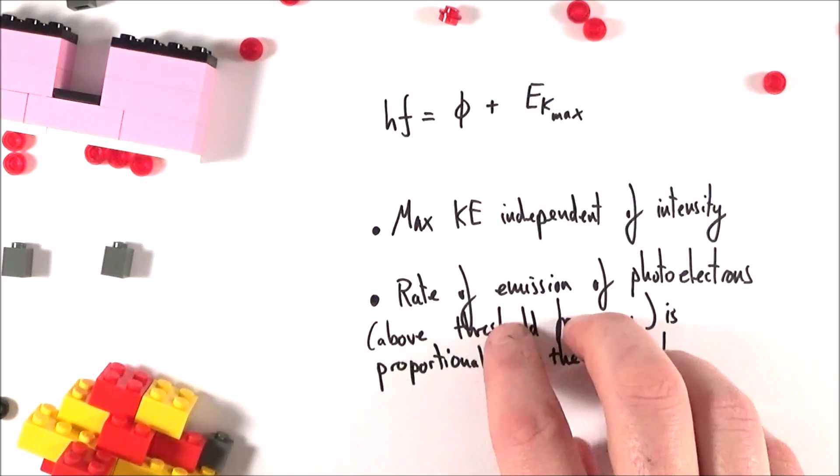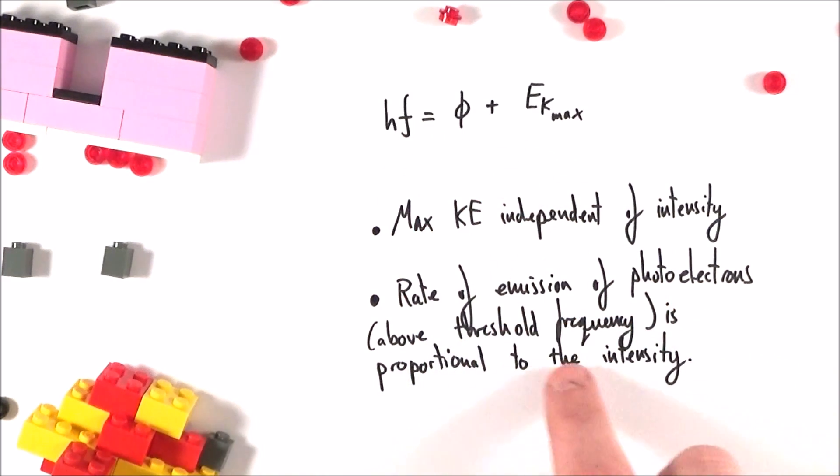And the second point is that the rate of emission of photoelectrons, obviously above the threshold frequency, is proportional to the intensity. Effectively one photon needed to liberate one electron. And this all kind of provided a lot of evidence that light can be considered as a particle.